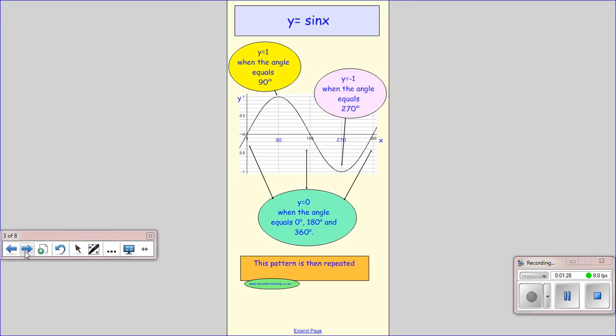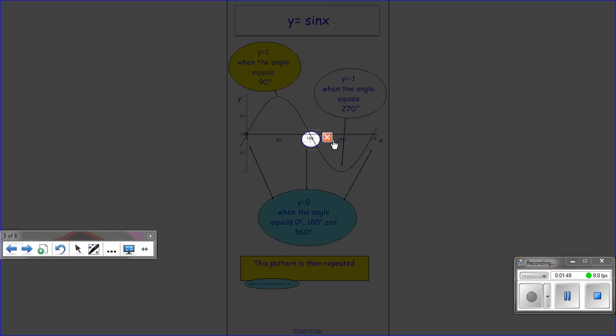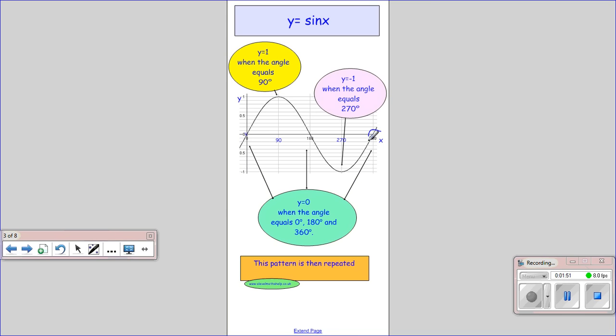Now in the next slide all we've got here is just a summary of what I said. We've got a maximum of y equals 1 at x equals 90 degrees, a minimum at y equals minus 1 when x equals 270 degrees. And it starts at the origin and then goes back through y equals 0 at 180 degrees and at 360 degrees.